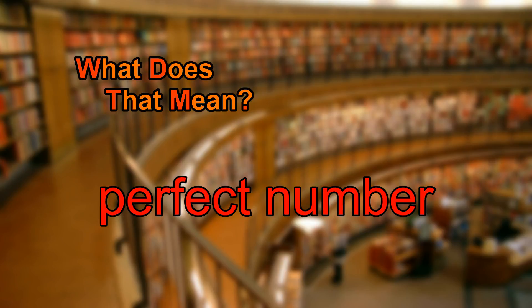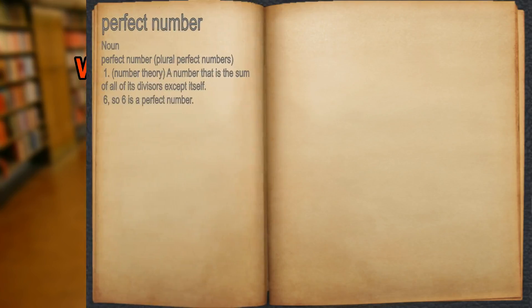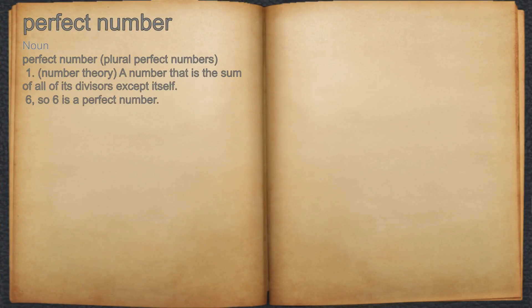What does perfect number mean? Perfect number. Noun. 1. Number theory: a number that is the sum of all of its divisors except itself.